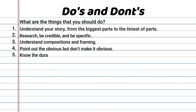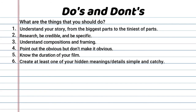Number five: know the duration of your film. You can create two to four hidden details if you plan on making a short film of at least 15 minutes. For a movie, at least five is already enough. For a series, you could go crazy adding details — but be careful. Number six: create at least one of your hidden meanings or details simple and catchy — it can get the job done and probably become iconic. Number seven: properly execute it, because a poor execution of this technique will be confusing.